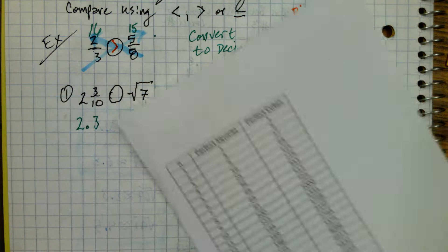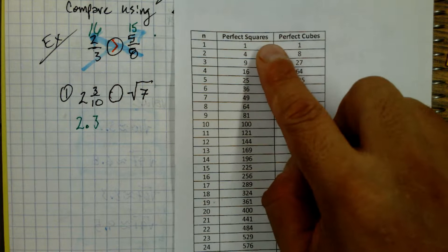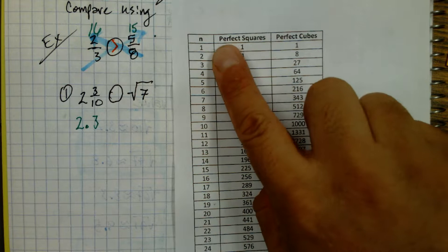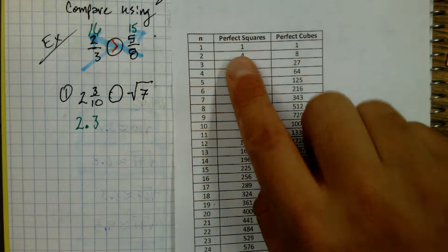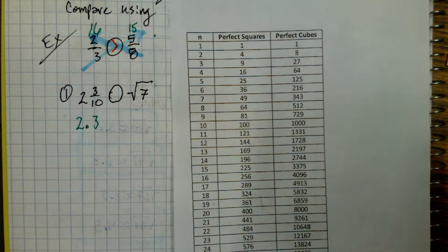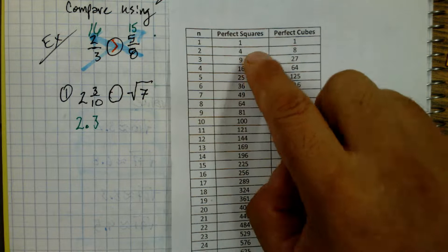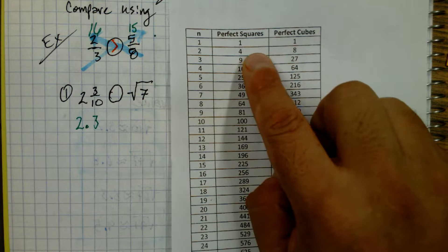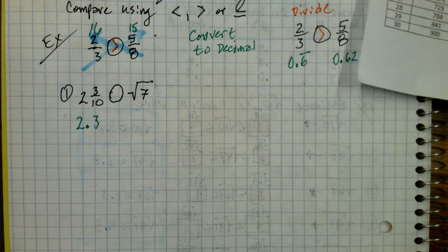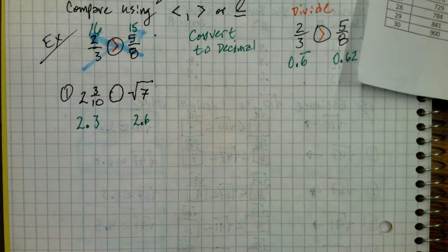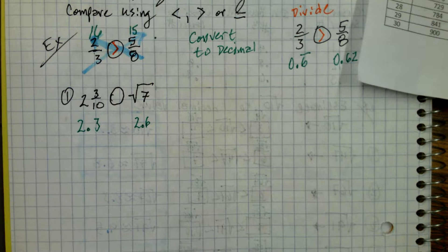Let's take our chart and look for where seven would be. It's between four and nine, so that means our answer is between two and three. Seven is two spaces away from nine, so it's going to be closer to three — maybe point-six, point-seven, point-eight. We just want a close enough answer, so let's go to two-point-six. Now it's obvious: the square root of seven is bigger.